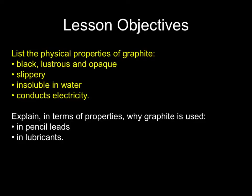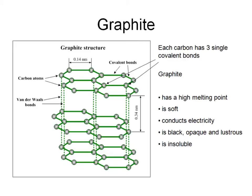Next, we look at the physical properties of graphite and relate those to the two main uses of graphite. Reviewing the structure of graphite, we see again that each carbon atom has got three carbons surrounding it by covalent bonds, but it only has weak attractions between each of these layers. So graphite has a high melting point because in order to melt it, you need to break these strong covalent bonds. But it's soft because these layers can slide over each other. It conducts electricity. It's black, opaque and lustrous — in other words, it catches the light.